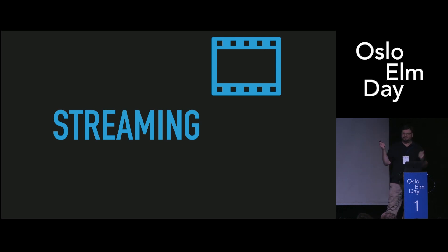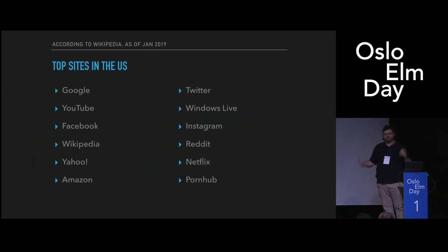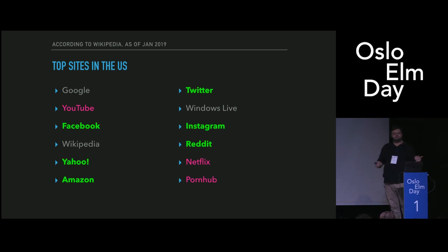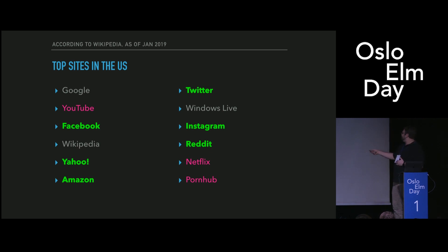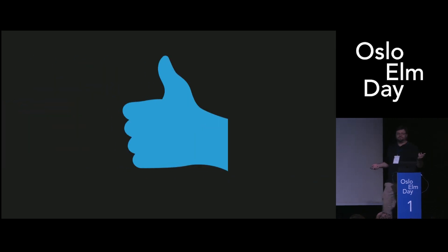Before we get into the how, I want to talk about why this is so important. These are the top 12 visited sites in the US as of January 2019. Of this list of the top 12, three of them are primarily video sites, including Pornhub. Another six aren't primarily video sites but have a really important video product. So Amazon has a TV service and a music service. Instagram serves videos. Reddit serves up a lot of multimedia content. Obviously Facebook, Yahoo, and Twitter do. And of the remaining three, two of them serve up a lot of audio and video. So all of these, except Windows Live, are using the media API in a pretty substantial way. On the Web, this is a really important API.